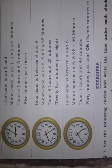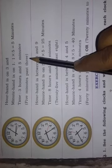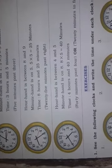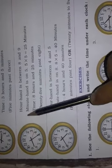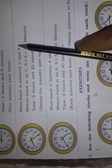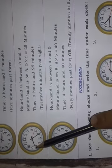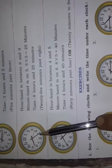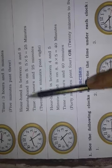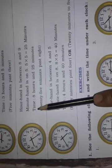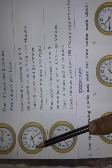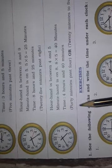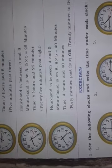That would be called 5 minutes past three. In another example, the hour hand is between 8 and 9, and the minute hand is on 5. So 5 multiplied by 5 equals 25 minutes. The time is 8 hours and 25 minutes, which is written as 25 minutes past 8.